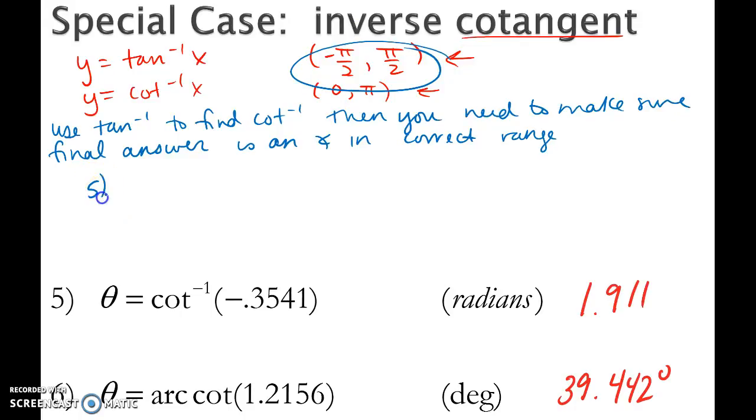So for number 5, when I type this in, I'm going to do tan inverse of 1 divided by negative 0.3541 and the calculator is going to give me the answer negative 1.231. Now this is a radian measure in quadrant 4. Remember our cutoff values that 90 degrees or pi halves was 1.57. So this value here is down in quadrant 4.